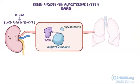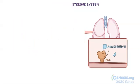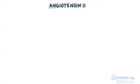When it reaches the lungs, angiotensin 1 is converted into angiotensin 2 by an enzyme called angiotensin converting enzyme, or ACE for short. Angio refers to the blood vessels, and tense means to tense.